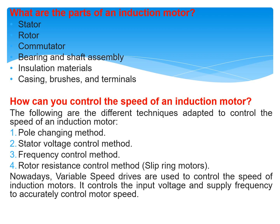How can you control the speed of an induction motor? The different techniques adopted to control the speed of an induction motor are: pole changing method, stator voltage control method, frequency control method, and rotor resistance control method for slip ring motors. Nowadays, variable speed drives are used to control the speed of induction motors by controlling the input voltage and supply frequency to accurately control motor speed.